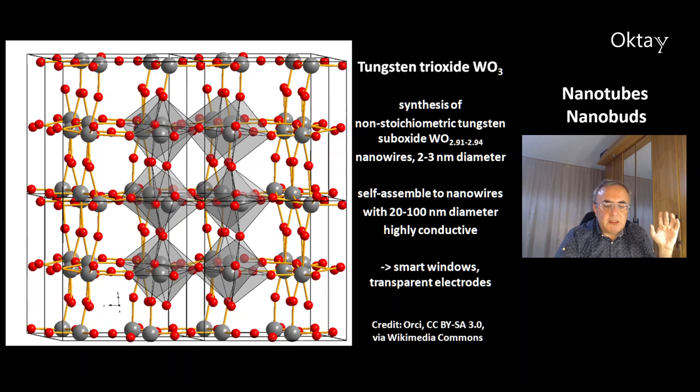This is a picture of tungsten trioxide, WO3. You can synthesize nanotubes from non-stoichiometric tungsten suboxide, WO2.1 to 2.94. They have a diameter of 2 to 3 nanometers. They can self-assemble to nanowires with 20 to 100 nanometer diameter, and they are highly conductive. These nanotubes are very interesting for smart windows and transparent electrodes.